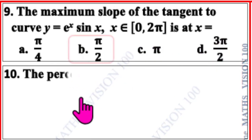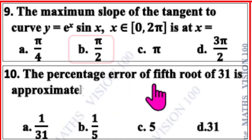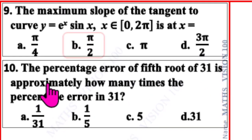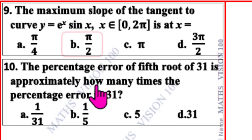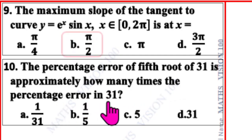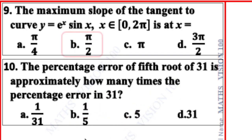Question number 10. The percentage error of the fifth root of 31 is approximately how many times the percentage error in 31? The correct option is B: 1/5.